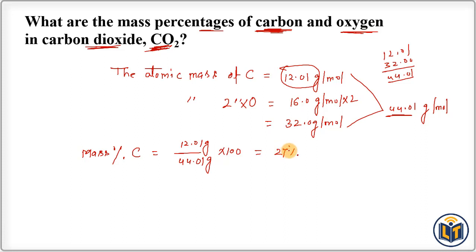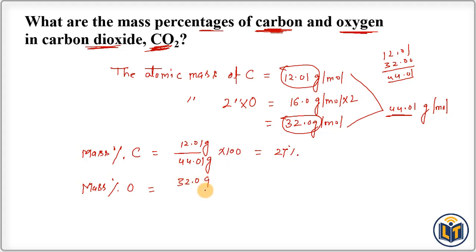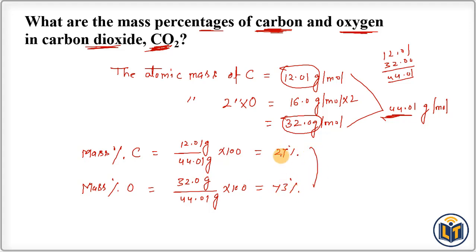Carbon is therefore present in CO₂ by approximately 27%. Now for oxygen: mass percentage of oxygen = 32.00 divided by 44.01, multiplied by 100, which gives approximately 73%. Adding the two values — 27% and 73% — gives 100%, confirming our calculation. This is how we calculate the concentration of an element in a molecule using mass percentage.